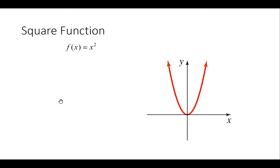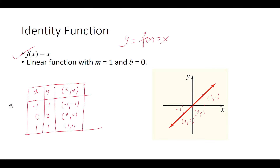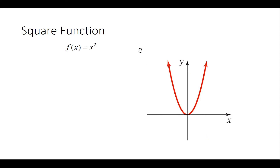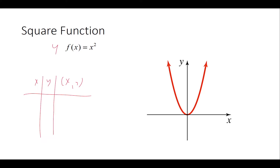Next is the square function. If you make a table the same way we did for the identity function, you will always get a parabolic shape. The table lists x and y values, where y represents this square function.